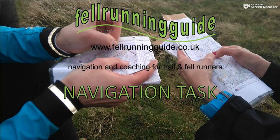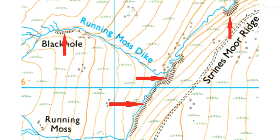Hi, this is Dave, fell running guide. Welcome to another navigation task. This one is a simple task - what we're being asked is: what are these black symbols here, the ones that the red arrows are pointing to? So what are those symbols and what do they represent?